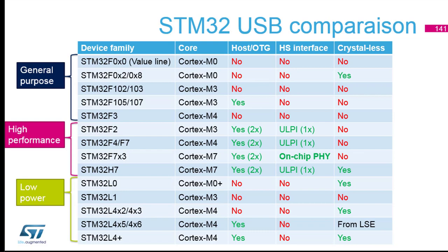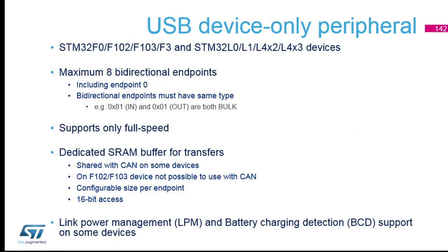For the device-only peripheral on older families and smaller packages, there is a maximum of eight bidirectional endpoints including endpoint zero. In USB theory we can go up to 16, but here we are limited to eight. This peripheral supports full speed only, and instead of a FIFO it has a dedicated SRAM which can be shared with the CAN peripheral if present on the part.